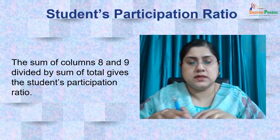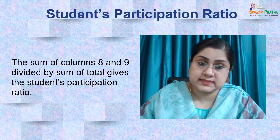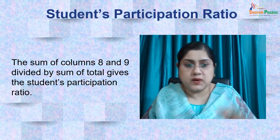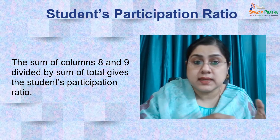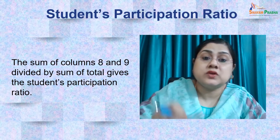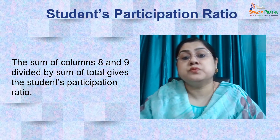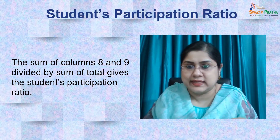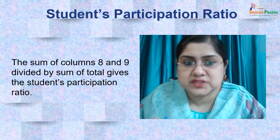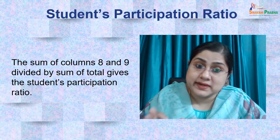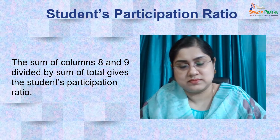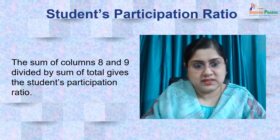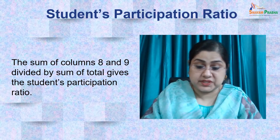The next interpretation is the student participation ratio. It is calculated by dividing the sum of column 8 and column 9 by the total sum. The result reveals how much the student has participated in the teaching-learning process.